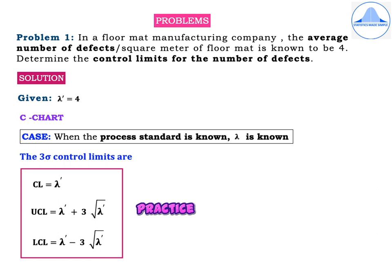Solution: given lambda dash is equal to 4. For the C chart, this is the case when the process standard is known, that is the lambda value is known to us. The 3-sigma control limits are: CL = lambda dash, UCL = lambda dash + 3√(lambda dash), and LCL = lambda dash − 3√(lambda dash).